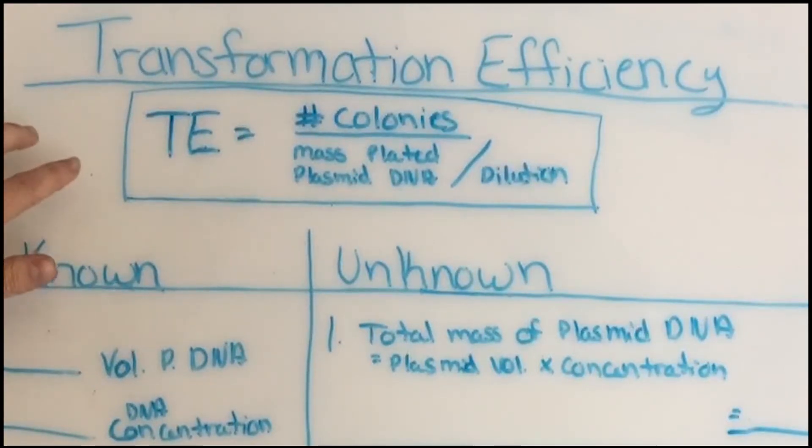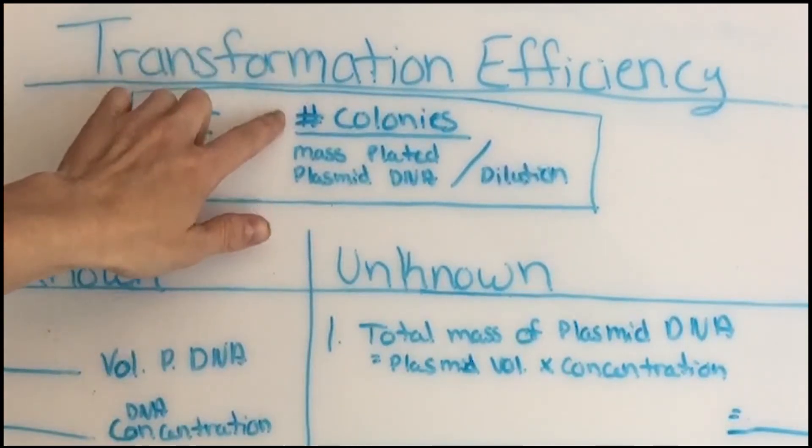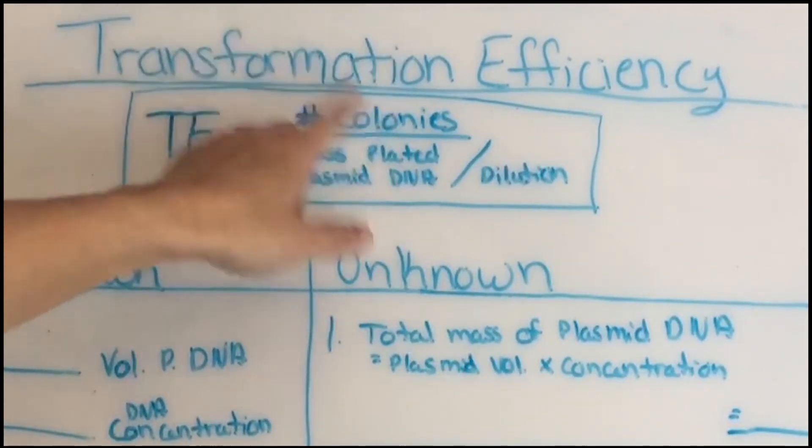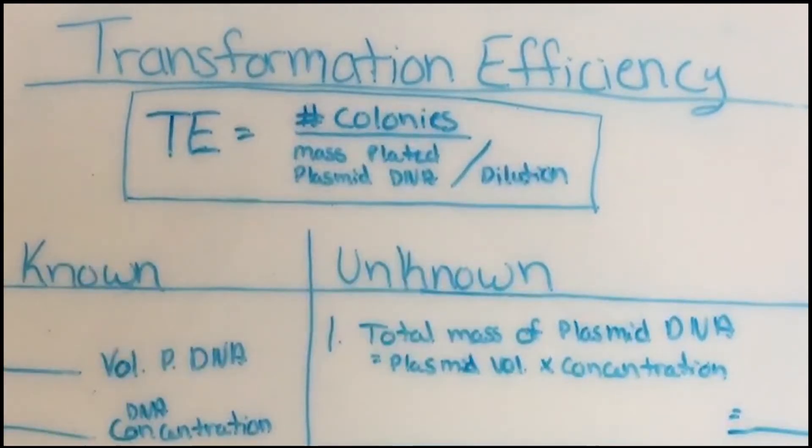So the general formula is going to look like this. You have TE, or transformation efficiency, equals the number of colonies that you count over the mass of plated plasmid DNA, and then you take that over the dilution that you end up using.